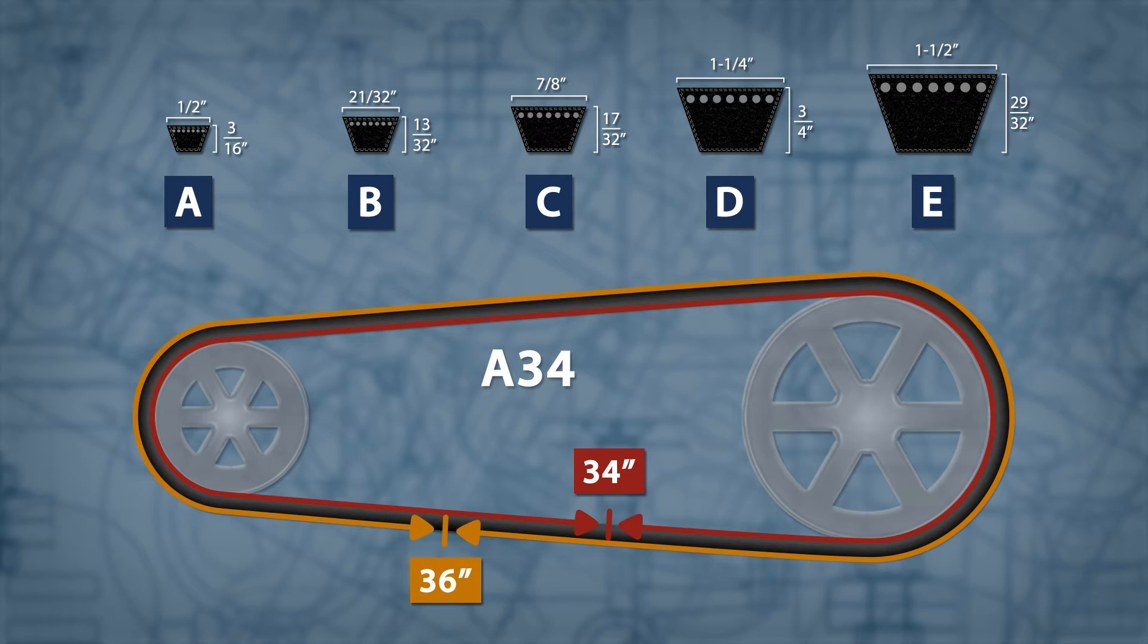Therefore, you can determine the belt number from the outside measurement. For example, an A belt subtracts 2 inches from the outside circumference, B subtracts 3, C subtracts 4, and so on.